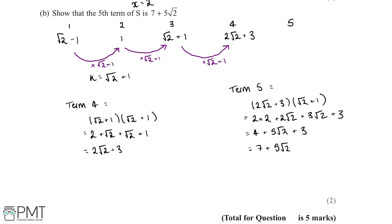This question is worth 2 marks. We get our first mark for using the common ratio to work out one of the intermediate terms, and our second mark for showing that the fifth term is 7 + 5√2 with supporting evidence.